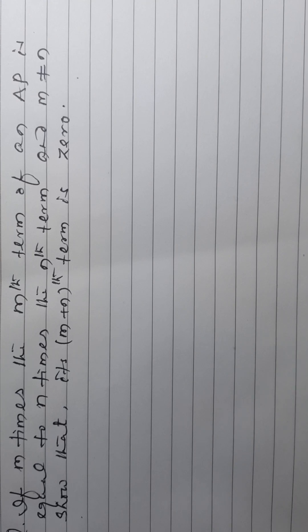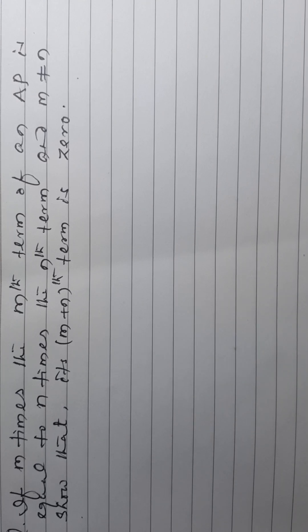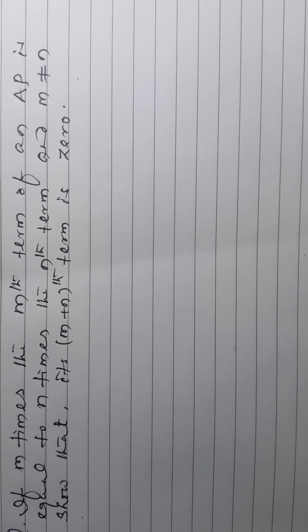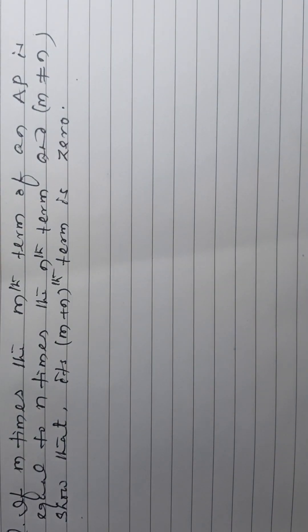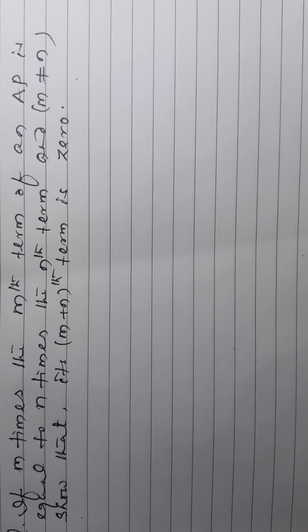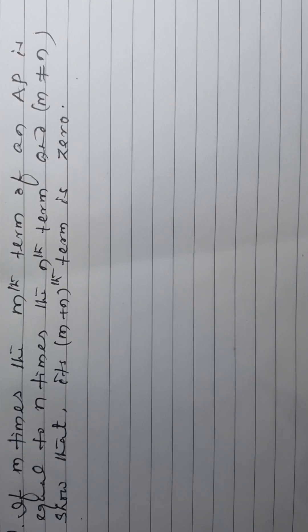If m times the mth term of an AP is equal to n times the nth term, and m is not equal to n, prove that the (m+n)th term is 0.